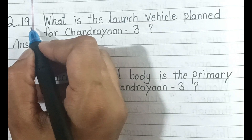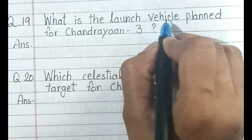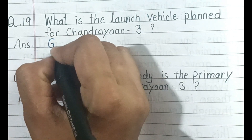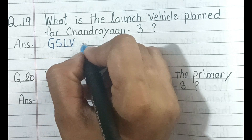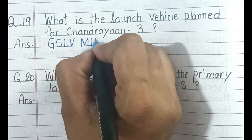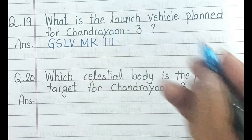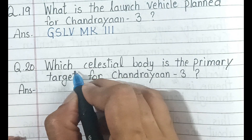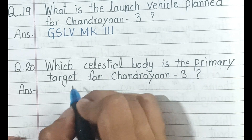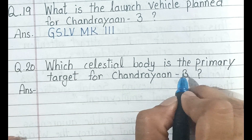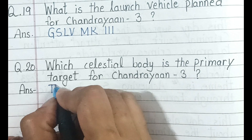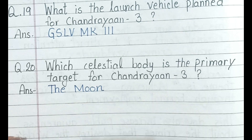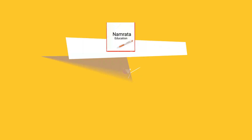Question number 19. What is the launch vehicle planned for Chandrayaan 3? And the answer is GSLV MK3. Question number 20. Which celestial body is the primary target for Chandrayaan 3? And the answer is the Moon.